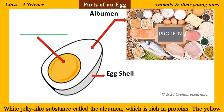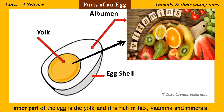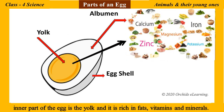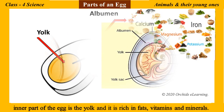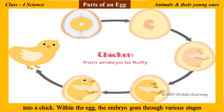The yellow inner part of the egg is the yolk, and it is rich in fats, vitamins, and minerals. The yolk contains food for the growing baby, or the embryo. The embryo develops into a chick within the egg.